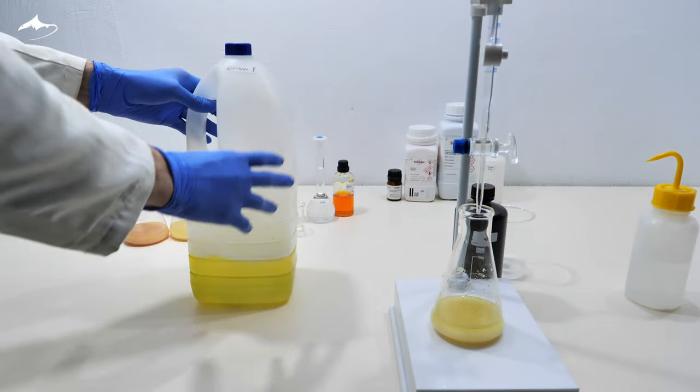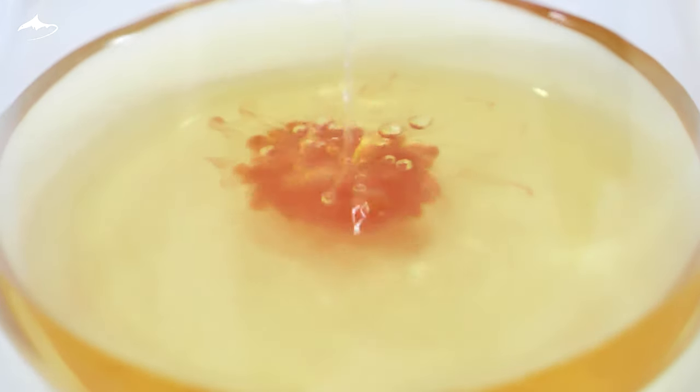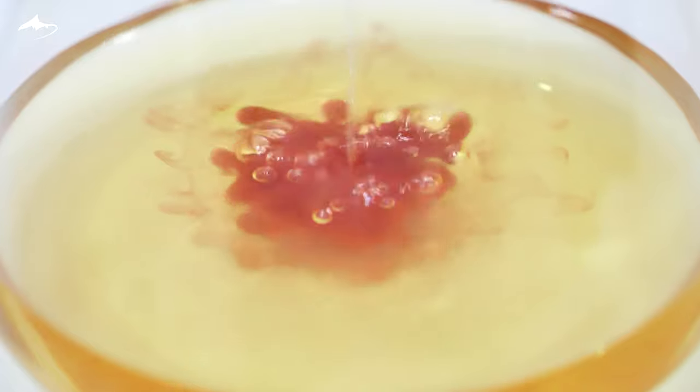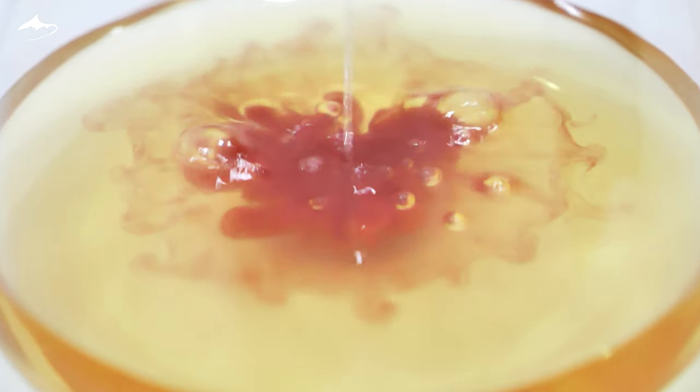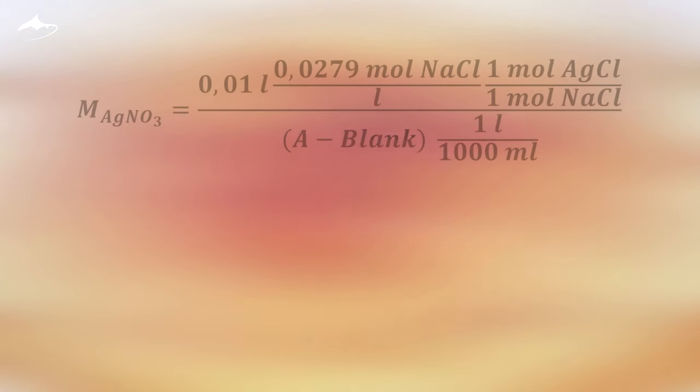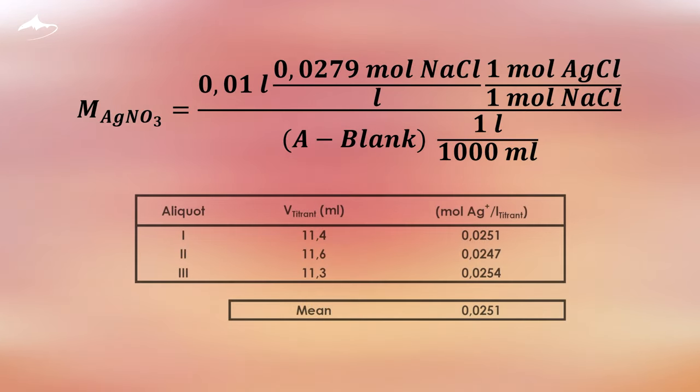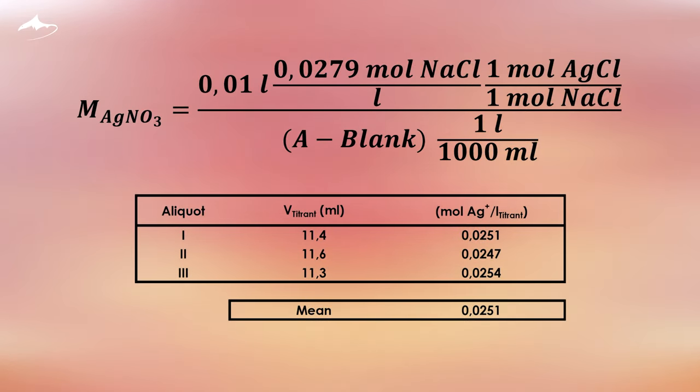After the procedure was completed, all solutions were disposed appropriately. Next thing is to calculate the molarity of the silver nitrate solution. We have the molarity of sodium chloride solution, their volume and the volume of titrant used for each aliquot. With that and using the equation shown, we can calculate the molarity of titrant as a mean value, where A is the volume of titrant used in milliliters. In this table you can see the results. The titrant solution has a silver concentration of 0.0251 molar.